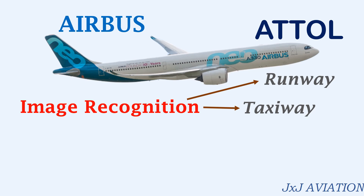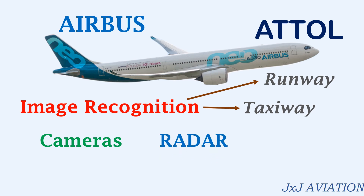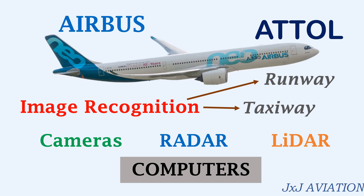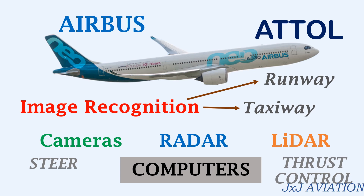This is done with the help of onboard cameras, radar and lidar, which is light based detection and ranging. The information from these sources is sent to onboard computers which process this information to steer the aircraft, increase or decrease the thrust, or to stop the aircraft as required.